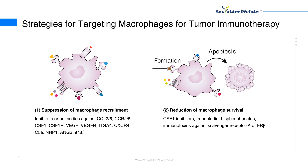1. Suppression of macrophage recruitment: Molecules on monocytes/macrophages, such as CCR2, CCR5, VEGFR, CSF1R, ITGA4, and C5A, contribute to the infiltration of macrophages into tumors. Inhibitors or antibodies against them or some of their ligands, such as CCL2, CCL5, VGF, and CSF1, could suppress the recruitment of macrophages. Reduced angiogenesis caused by targeting NRP1 and ANG2 could also result in a decrease in macrophage recruitment.